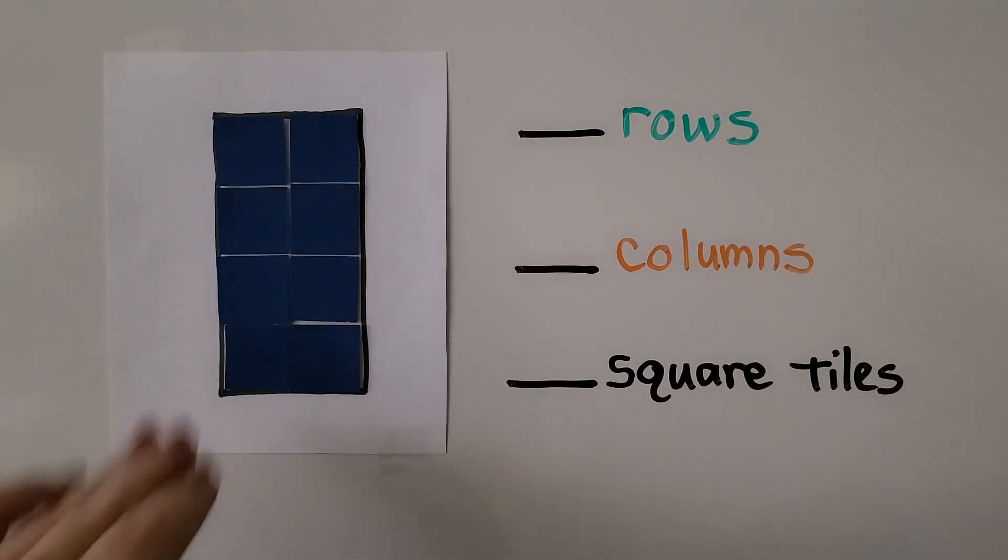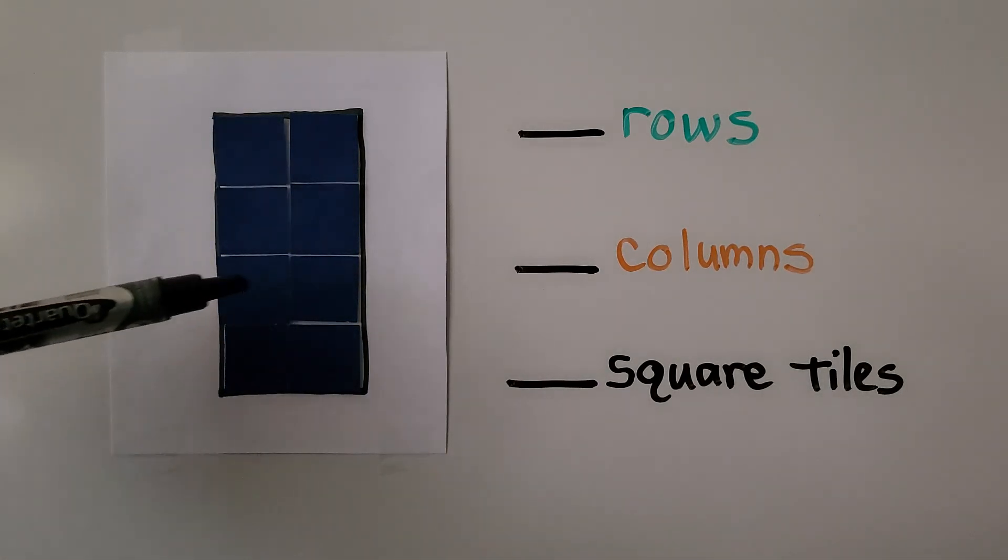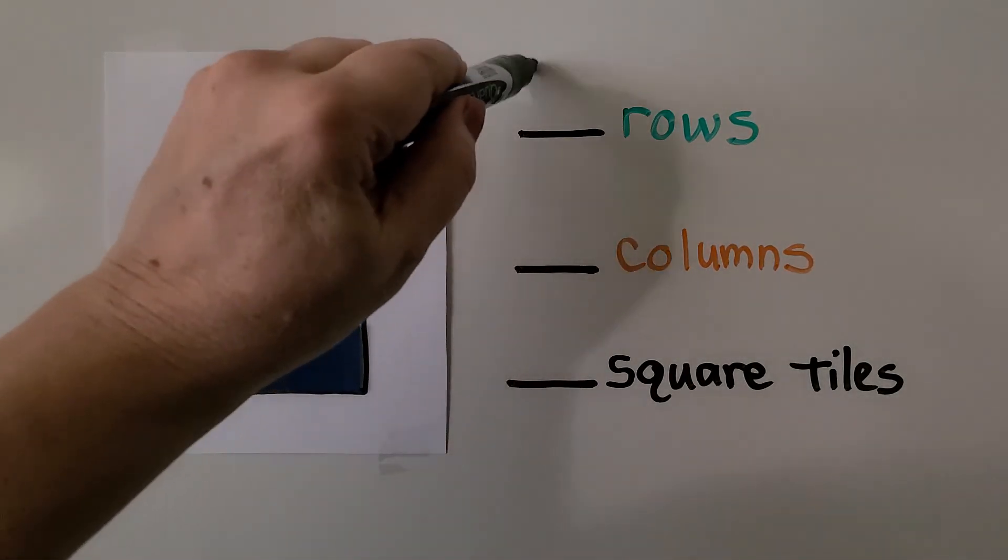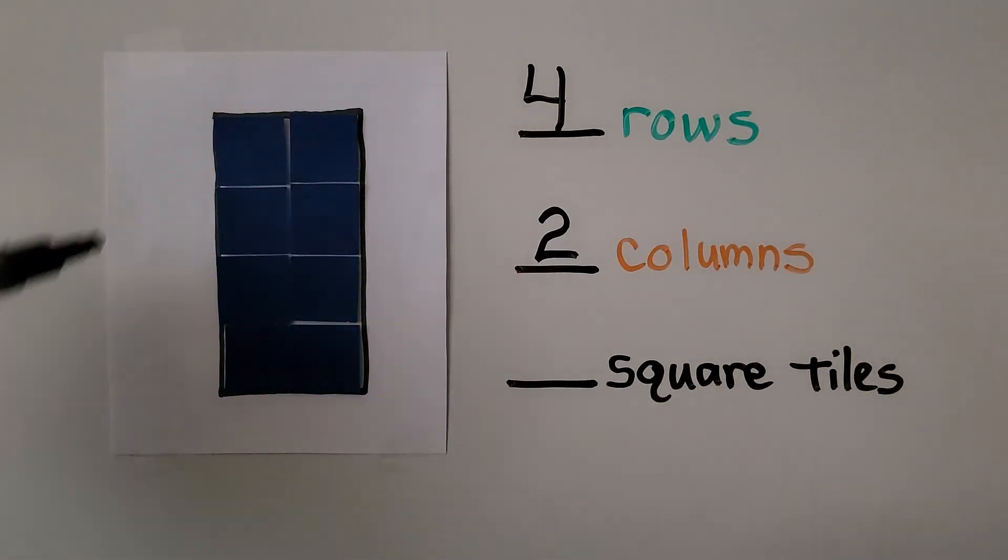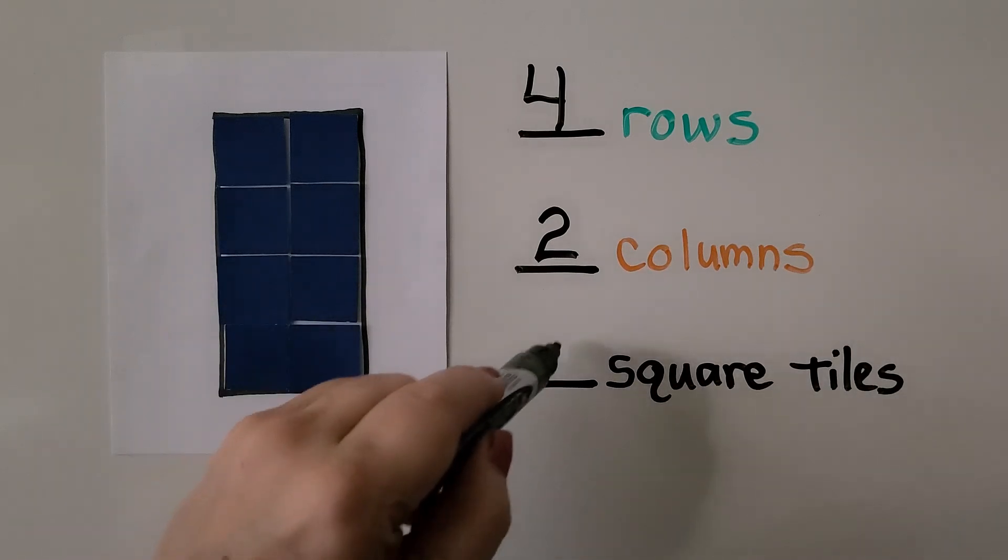We have 1, 2, 3, 4 rows. And we have 1, 2 columns. That's 2, 4, 6, 8 square tiles.